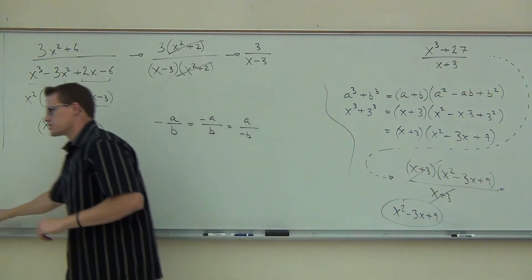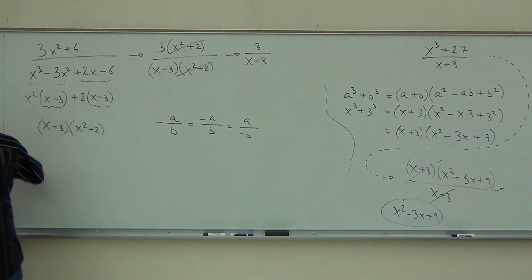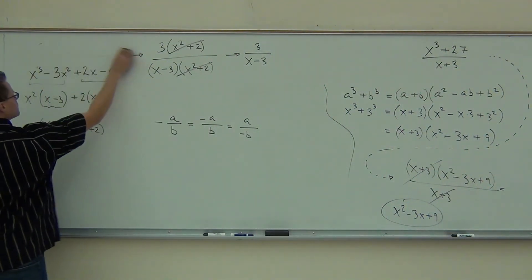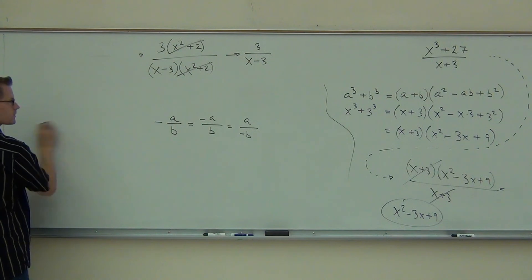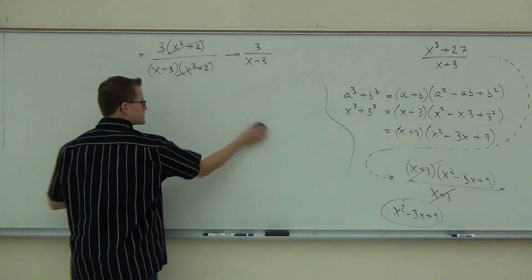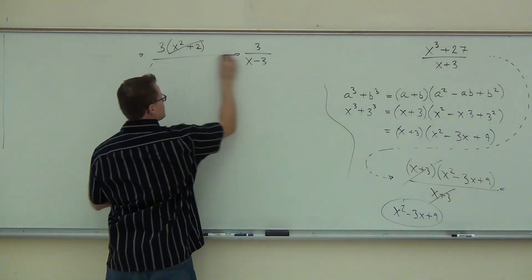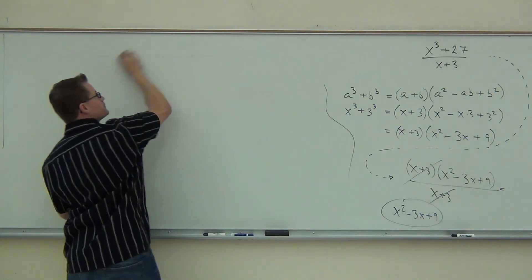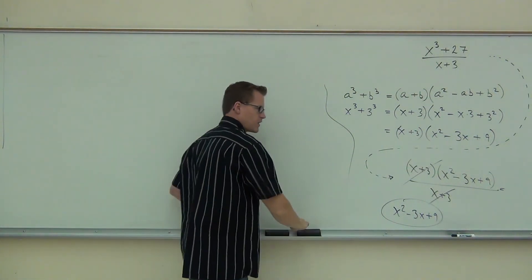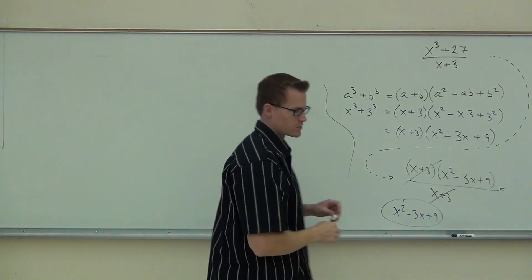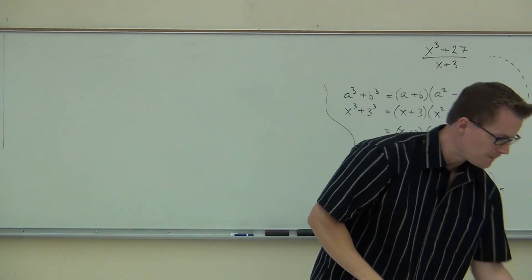We're going to go on to section 7.2. For the rest of our time, we'll talk about how to multiply and divide rational expressions — that just means fractions of polynomials, just like we've been dealing with.